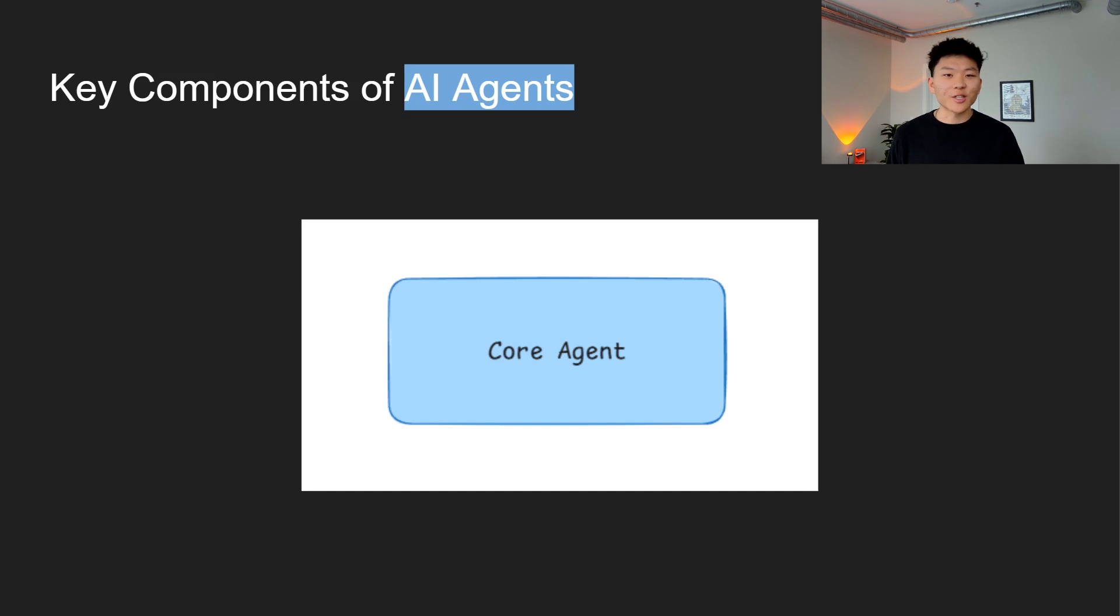So breaking down the core components of AI agents, first up we have the core agent. Think of this as the brain of the operation. The core agent is the central processing unit that integrates all functionalities. Every decision, every action, it all stems from the core. Without it, the AI agent is just a bunch of disconnected tools and data.